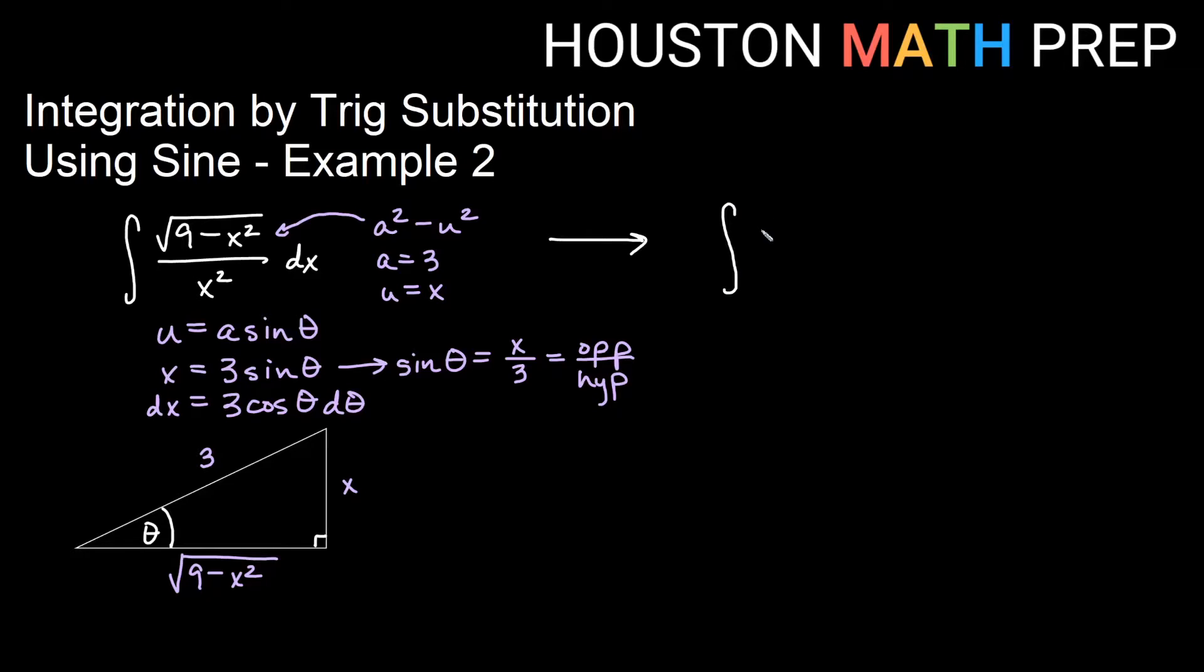So we'll have the integral of square root 9 minus, now if x is 3 sine theta, I need to square all of that. So I actually get 9 and I get sine squared theta. And then in the bottom here, if I just have x squared, then that is plain old 9 sine squared theta again. dx, we'll write it out to the side, so that's going to be 3 cosine theta d theta.